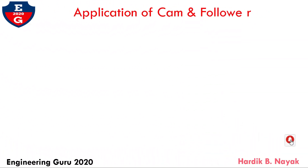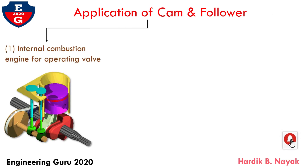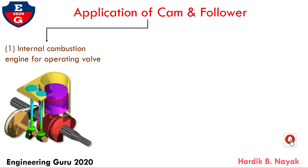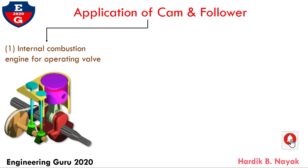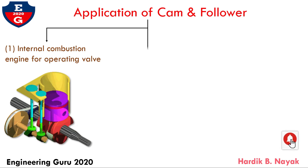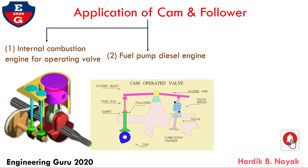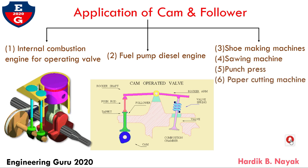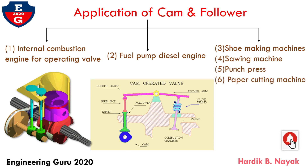Now, application of cam and follower. The cams are widely used for operating the inlet and exhaust valve of internal combustion engines. Here you can see that this is follower and this is cam. Rotary motion is converted into reciprocating motion and used for opening and closing of valves in IC engines. Cam and follower are also used in fuel pump diesel engines, shoemaking machines, saw machines, punching machines, and paper cutting machines.